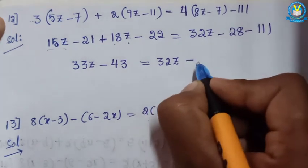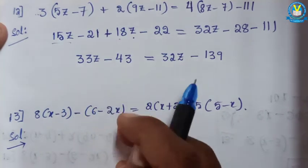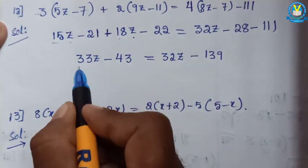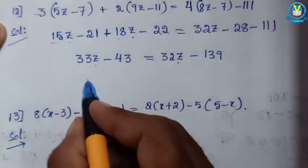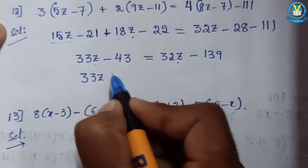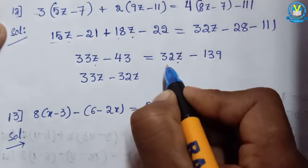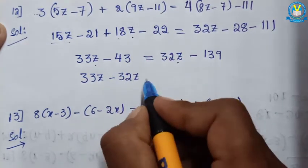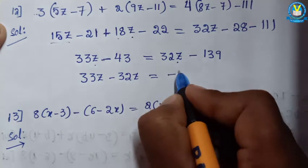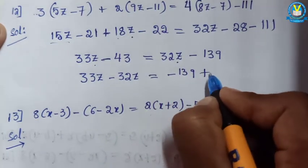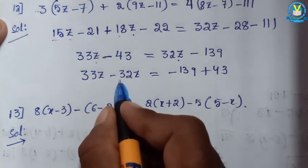That gives minus 139 on the right side. Here also having a z variable. Now I can transpose this variable to the LHS: 33z minus 32z. Because first of all it has the positive sign; after moving to this side it turns into negative. 139 plus 43 — also the same: first of all negative, after moving this side positive. So 33z minus 32z.